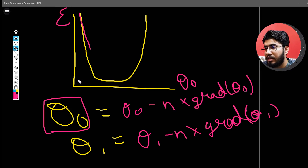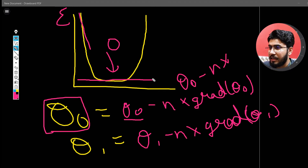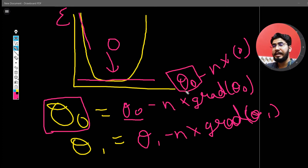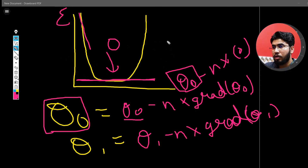When you get to the minimum point, the slope of the line at that point is zero. When you apply the update formula — theta 0 minus n times the slope — the slope is zero, so it is multiplied by zero, and theta 0 remains theta 0. You are not going to update it once you reach that position. This is very good because you can find the minima of this function and it will not increase or decrease after reaching it.